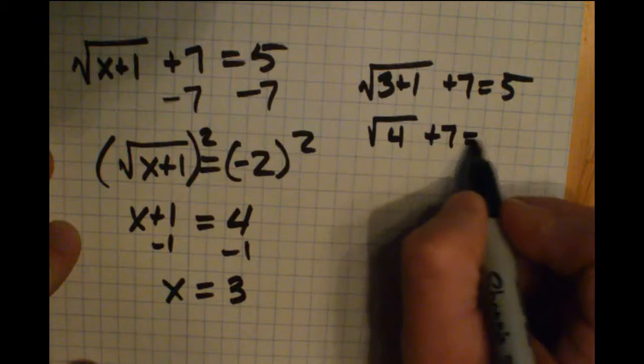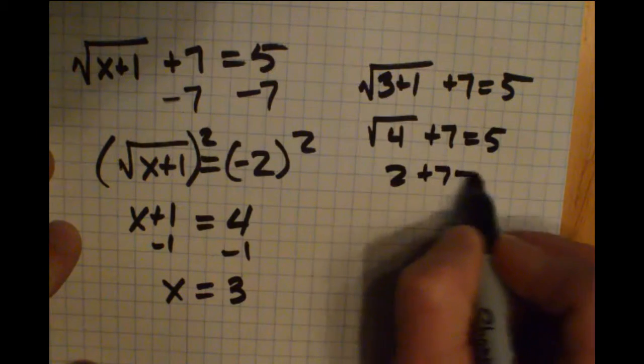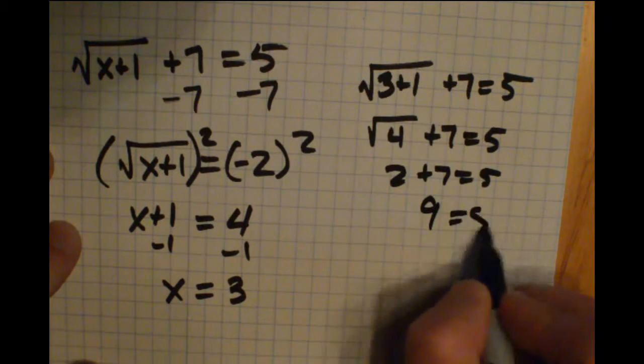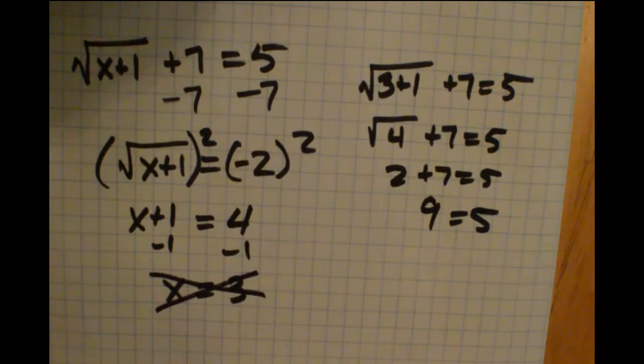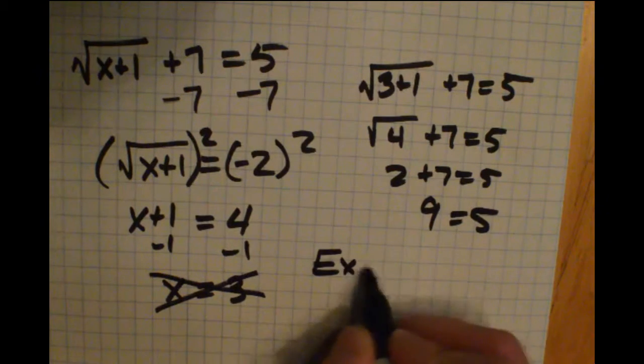That's going to be square root 4 plus 7 equals 5. That's 2 plus 7 equals 5. And that's going to be 9 equals 5, which is not true. So I know this solution is invalid. That is called an extraneous solution.